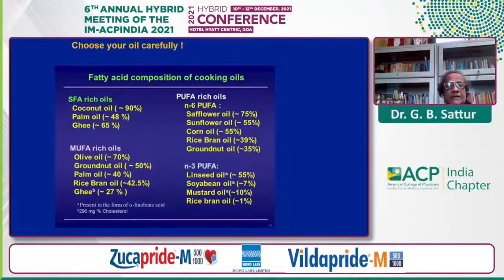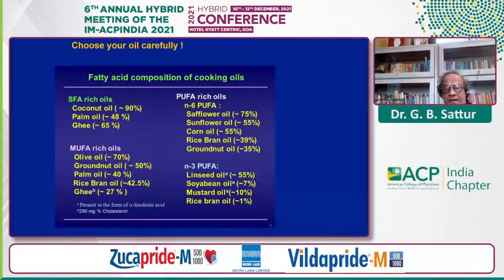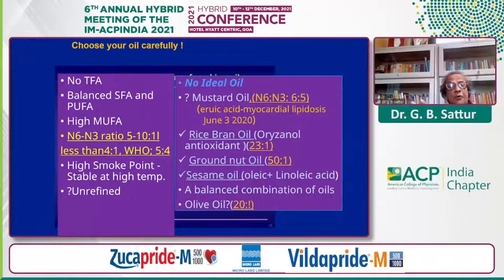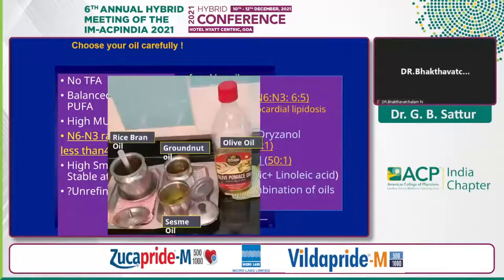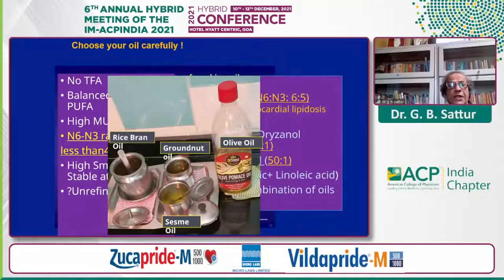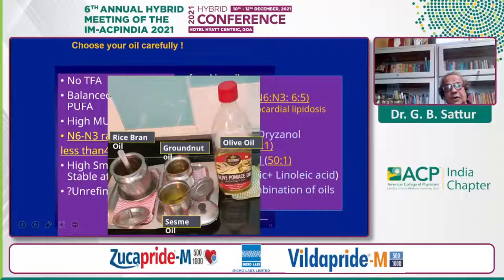Choose your oil carefully. MUFA-rich oils should also have good PUFA. Groundnut oil — 50% MUFA and around 35% PUFA — is preferred. Rice bran oil has 42% MUFA and 39% PUFA. Mustard oil is the first recommendation, with erucic acid causing myocardial lipidosis now disproven — from 2020 onwards it is extensively used in the USA. The take-home message: in your kitchen, make sure you have three to four oils. Use rice bran oil for seasoning, groundnut oil for chapati, olive oil for rice preparations, and sesame oil for some seasoning. The idea is to use a different oil for different purposes.